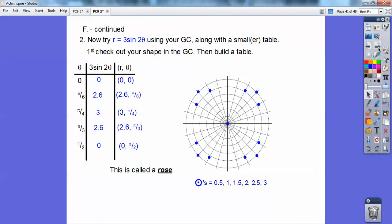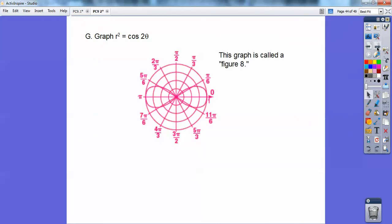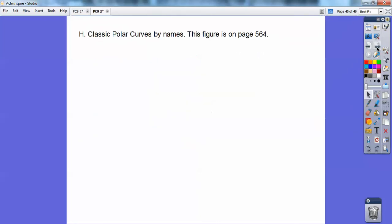All right, so when it's in this form right here, it's going to graph a rose right there. So I'll graph this guy right here, and that's going to give me a figure eight right there, so that graph is called a figure eight.